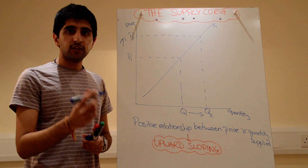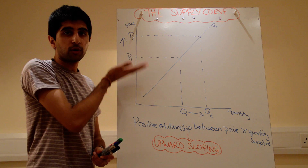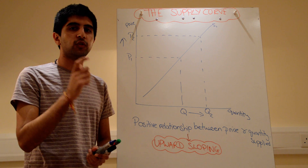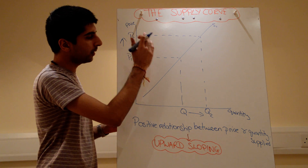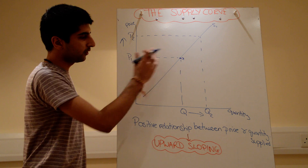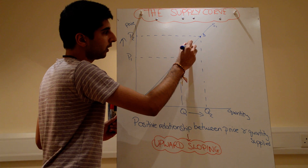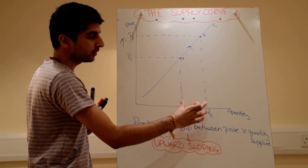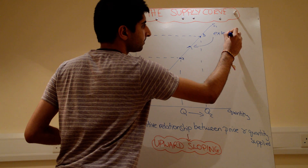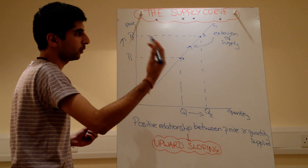Let's show the basic extensions and contractions along the curve. Assuming ceteris paribus — when we change the price, we just move along the curve, assuming all other factors affecting supply remain the same. When the price goes up, quantity of supply goes up. Starting at point A, we increase the price and end up at point B, moving up the curve. Because quantity supplied has gone up, that's an extension of supply.